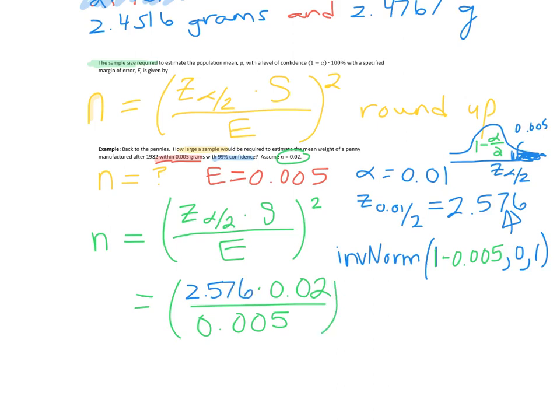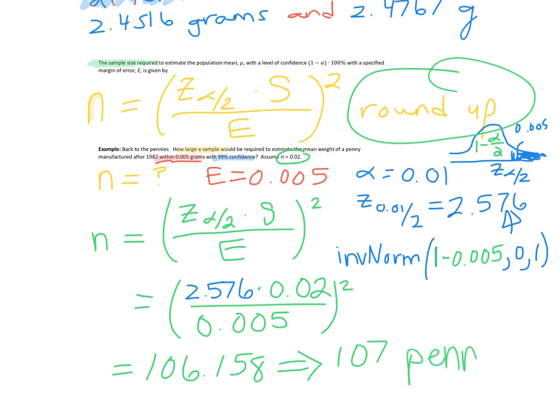Okay. So you're going to carefully do that calculation. Remember to square everything. And you're going to get 106.158. And we only round up in a couple of occasions, right? And then this is one of them, we're going to want to round up. So this is really telling us that we need 107 pennies, that's the size of our sample, if we want to hit a 0.005 margin of error, and a 99% confidence.